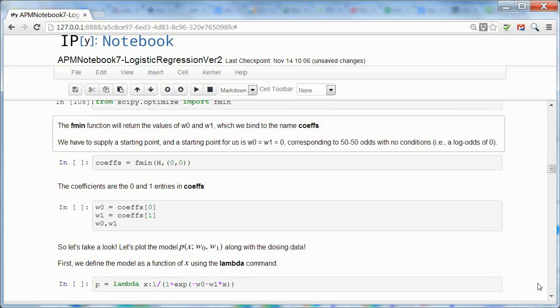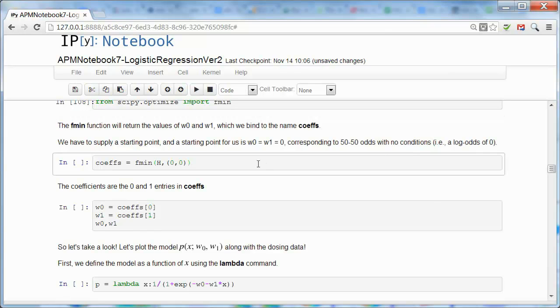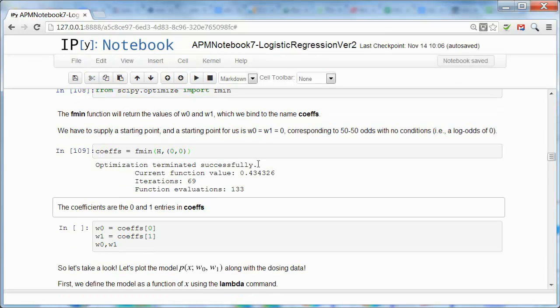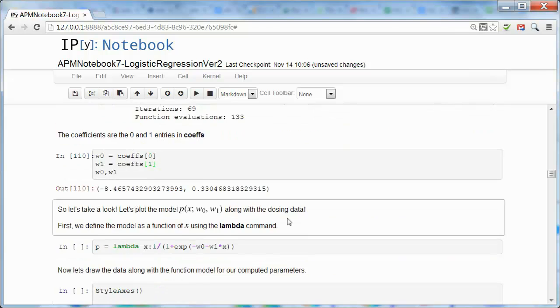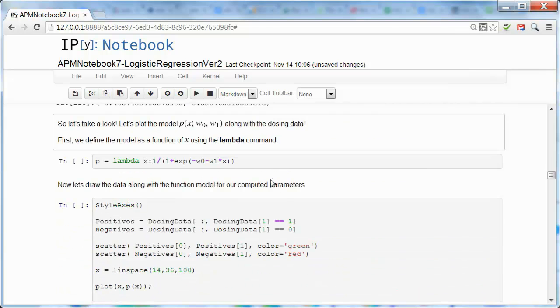We're going to take an initial guess of 0, 0, corresponding to 50-50 odds. And that's going to give us coefficients w0 and w1. And I'm going to define those explicitly, and there they are. So there's our w0 and w1 coefficients.